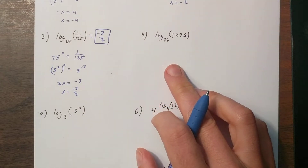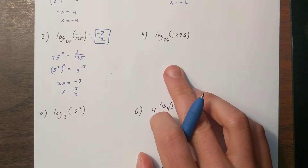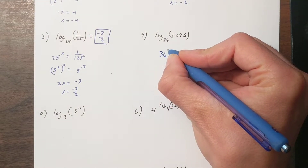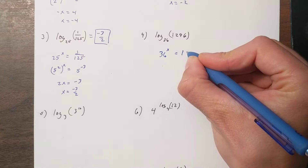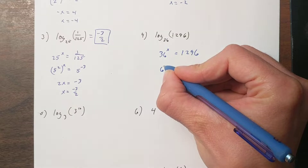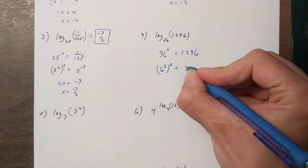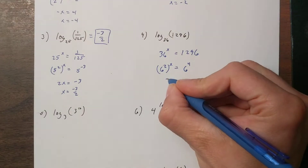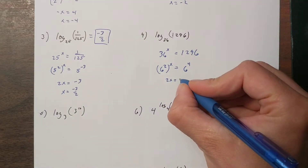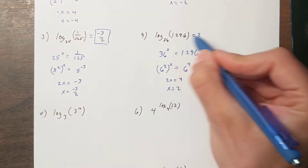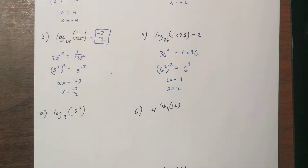This one looks hard just because of the size of the numbers, but it's asking: 36 to what power is 1296? Well, 36 is 6 squared, and 1296 is in fact 6 to the fourth power. So 2x equals 4, which means x equals 2. So 36 squared is actually 1296 — a bit more straightforward once you see it.